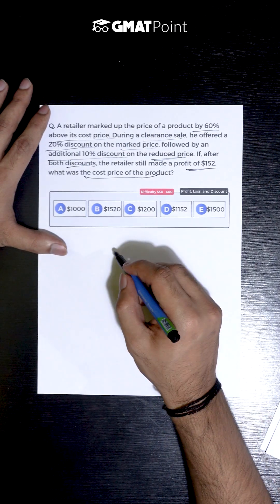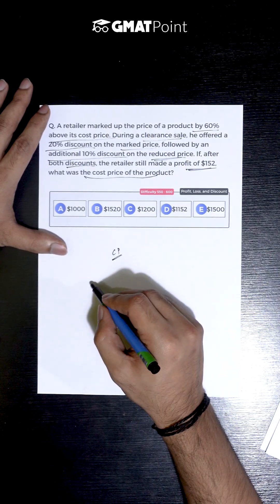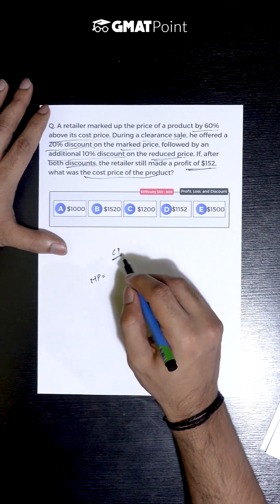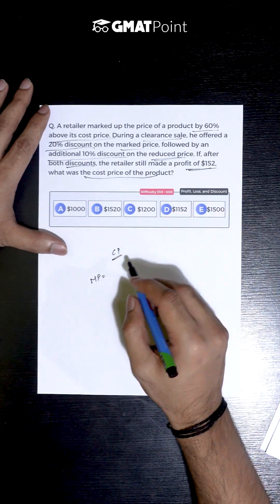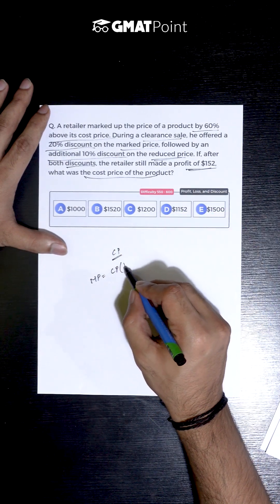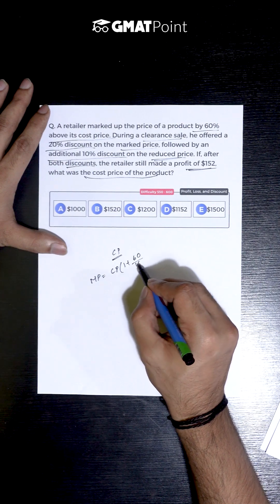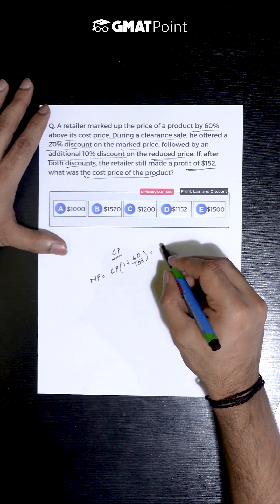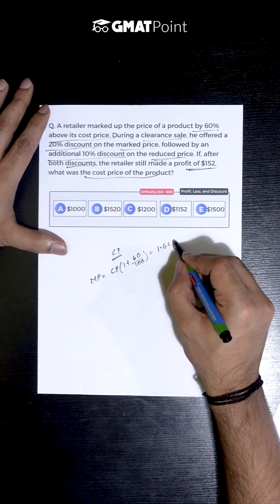So let us assume the cost price of the product to be CP. We are told that the marked price is 60% above this cost price. So the marked price can be calculated as cost price times 1 plus 60 by 100. This is nothing but 1.6 CP.